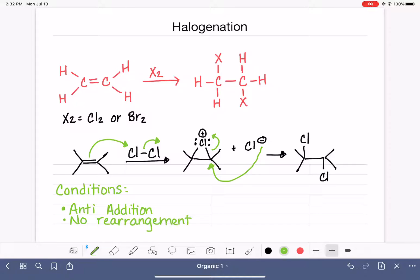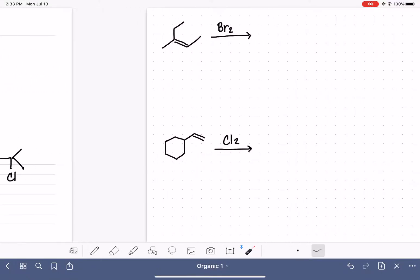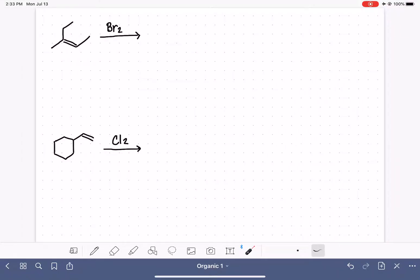So this reaction is pretty simple when it comes to knowing that you're going to put one halogen on each carbon of the double bond, but it's actually pretty tricky when it comes to dealing with the stereochemistry. So let's take a look at two examples of this reaction and how you can draw the stereochemistry correctly every time without any sort of issue.